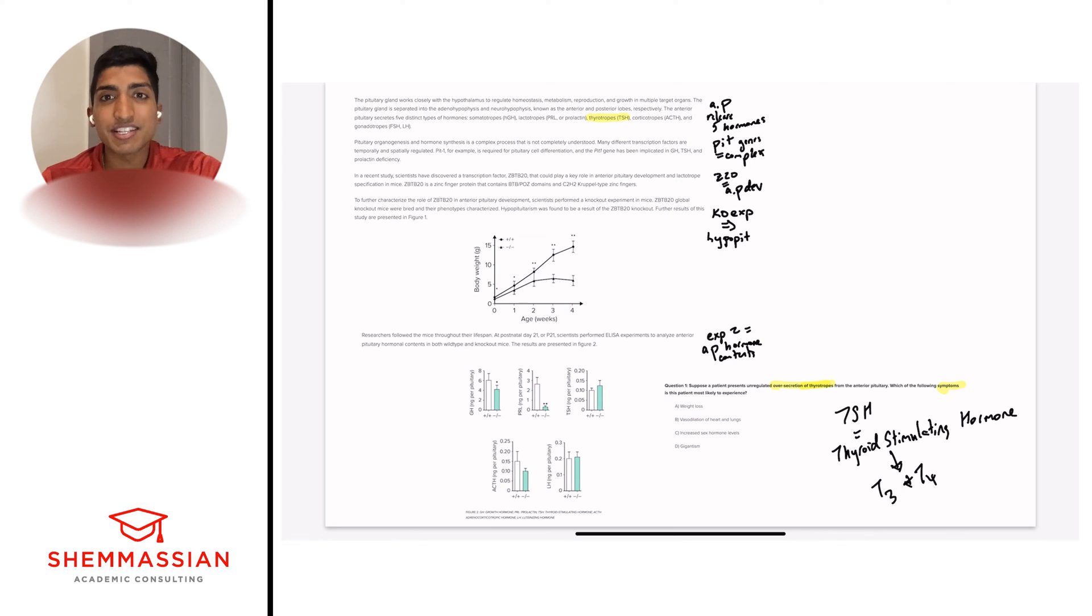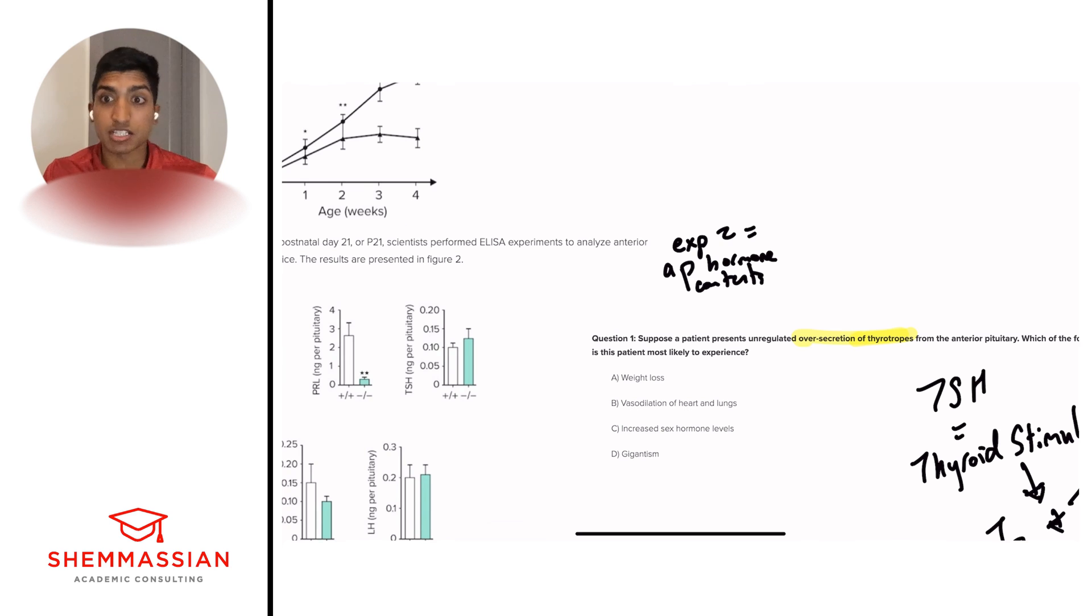So T3 and T4 are metabolism hormones. If we have increased T3 and T4, we expect higher levels of our basal metabolic rate. So this results in increased metabolism. Now we have to look at our answer choices and think, what does increased metabolism lead to? Does it lead to weight loss? That looks like a great answer, so I'm going to leave that for now. Increased weight loss is a result of working out, we'd expect weight loss if we have increased metabolism. Vasodilation of heart and lungs doesn't really make sense. Increased sex hormone levels is not really associated, that's more associated with gonadotropes, so we'll cross that out. Gigantism, not really associated, probably more growth hormone associated, so we'll cross that out. We're going to stick with A, weight loss, and already we're one for one.